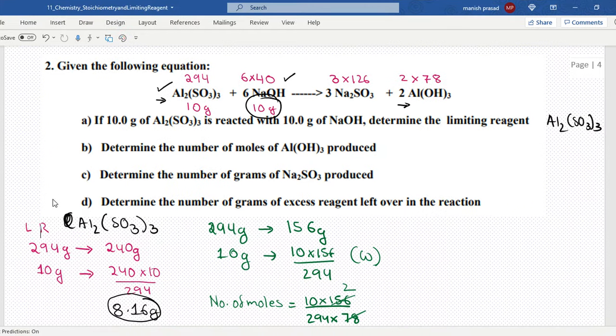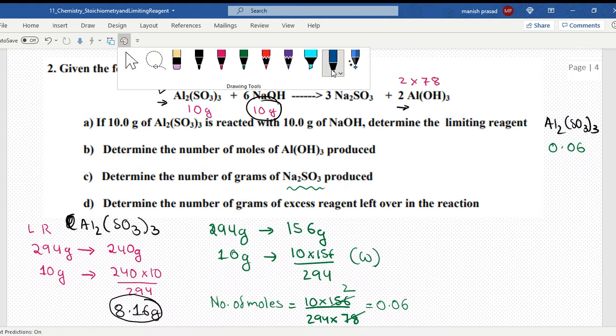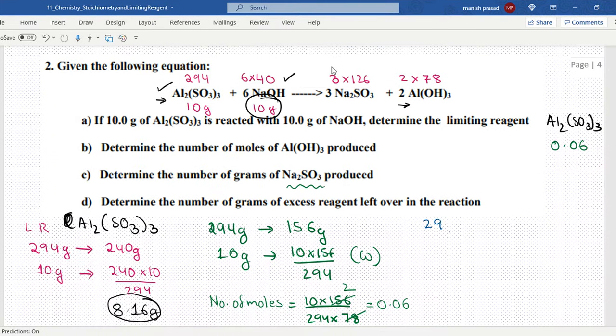0.06 moles as per everyone's answer. Now number of grams of Na₂SO₃ produced - again we go to the limiting reagent. 294 grams is going to produce 3 into 126 grams. So 10 grams will give us 126 into 10 divided by 294 grams. Let's get the answer of how much sodium sulfite is produced.